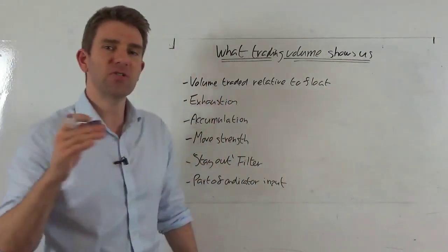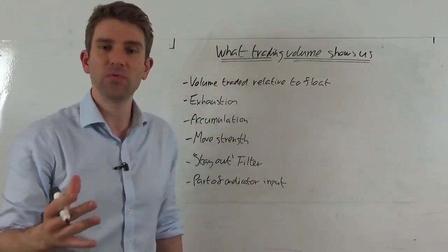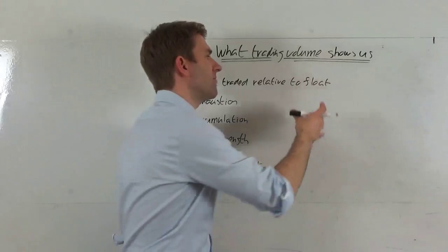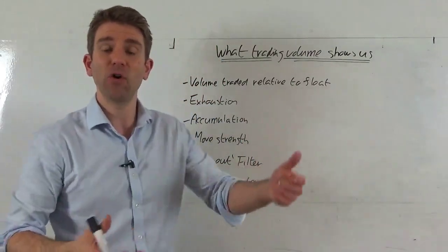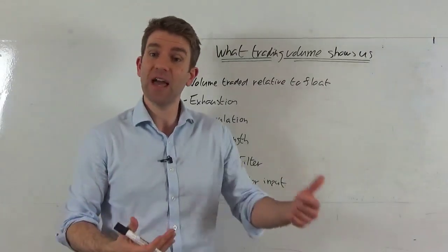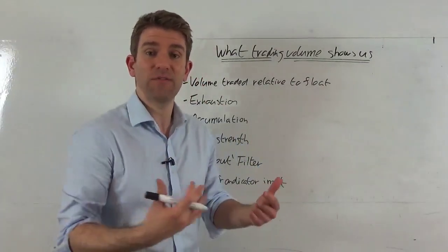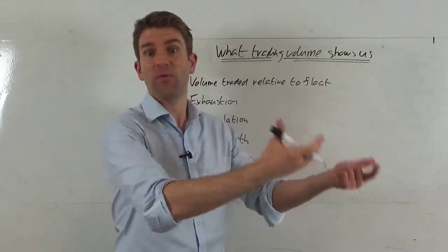The first thing is if we're trading a stock or a share, we can look at the volume traded relative to the float. What is the float? The float is the number of shares in issue. If volume is presented to us in number of shares traded, we can often say this stock's got X amount of shares in float and today so far we've traded a third of the float, for example.